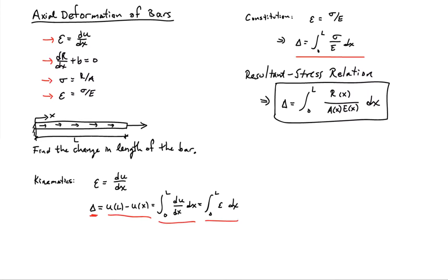So that gives us a working relationship for the system. And then we could use equilibrium, which is our remaining equation. You'll notice that I've used three equations embedded into this equation here. So inside this equation is the kinematic law, the relationship between the stress and the resultant, and the constitutive law. And the only equation that's missing there is the equilibrium equation. So I can use equilibrium to find out what r of x is, and then I could solve for the change of length of the bar.